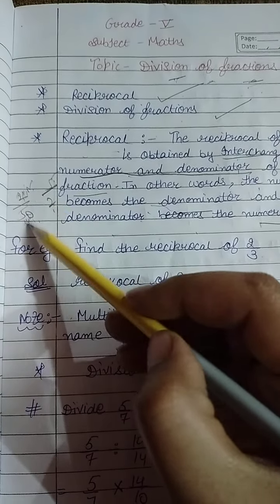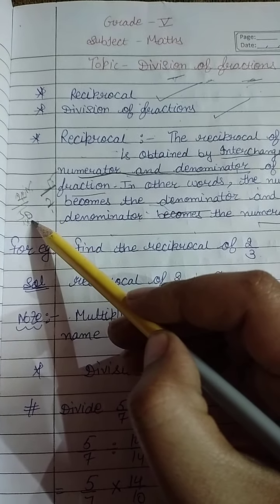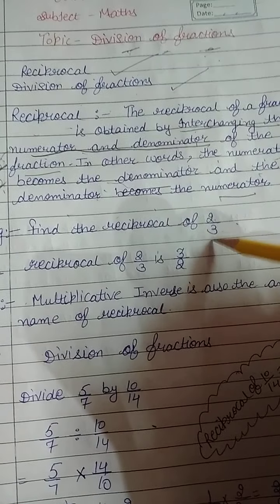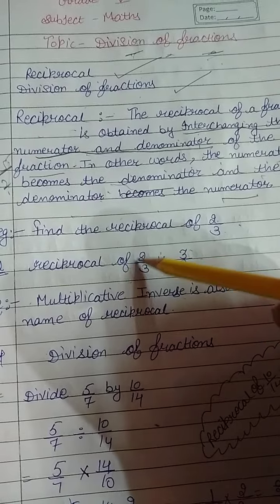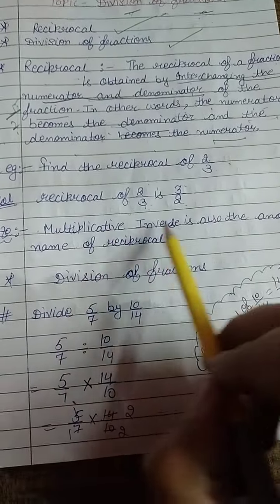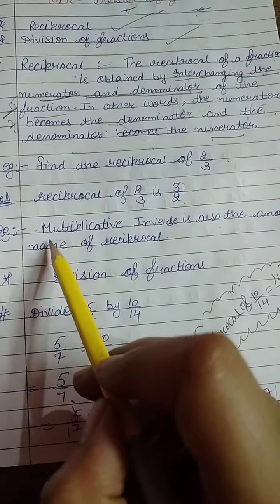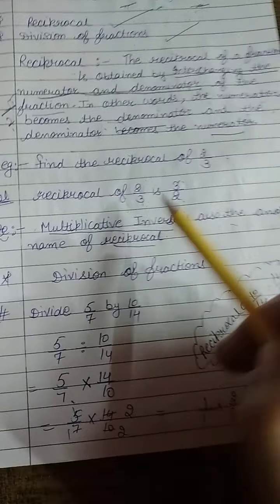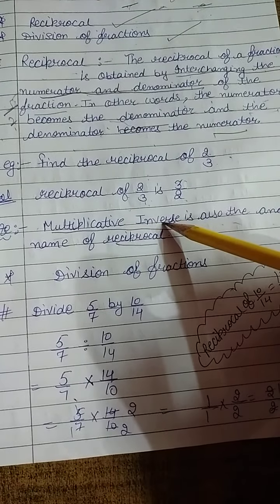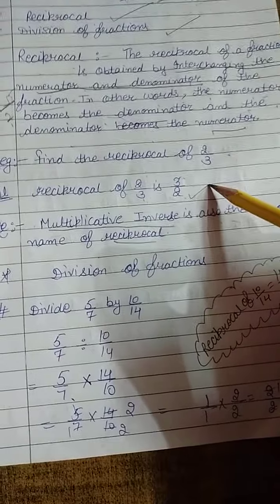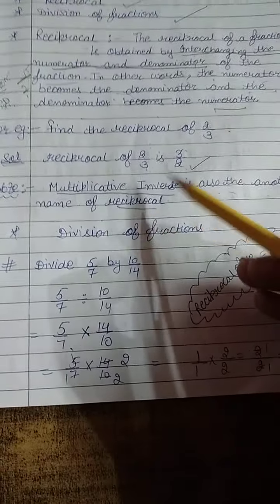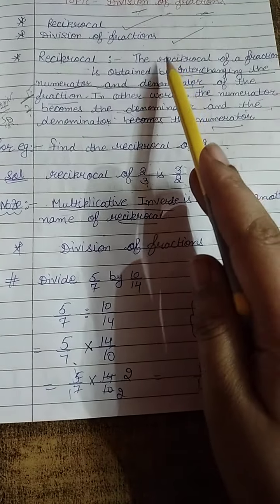You have to interchange the numerator and denominator. For example, the reciprocal of 2 by 3 is 3 by 2. Another name for reciprocal is multiplicative inverse. So if they ask you to find the multiplicative inverse, that also means you have to find the reciprocal of that fraction.